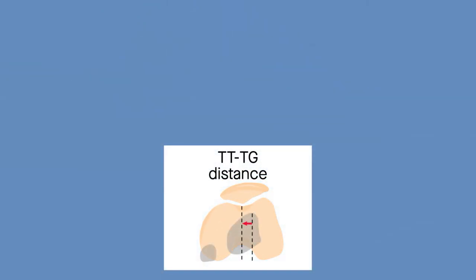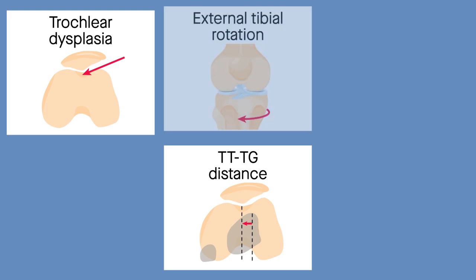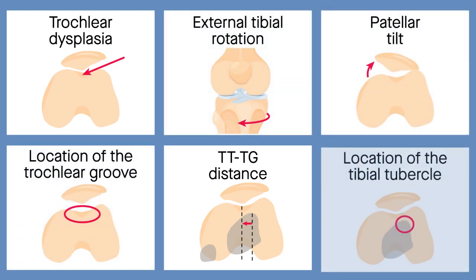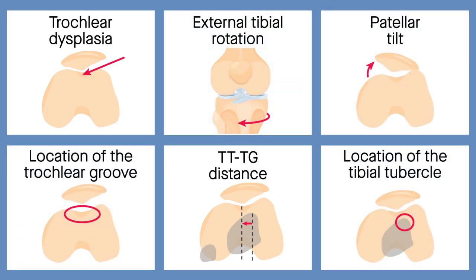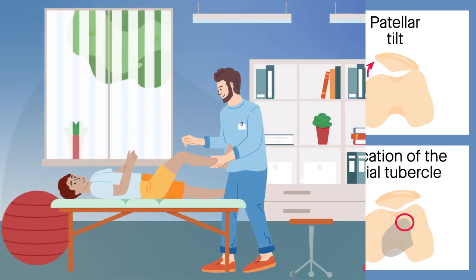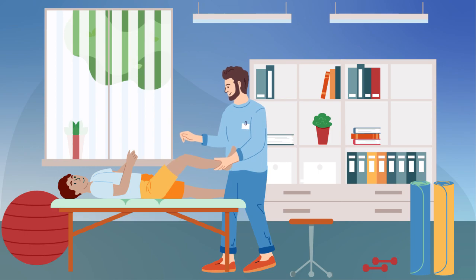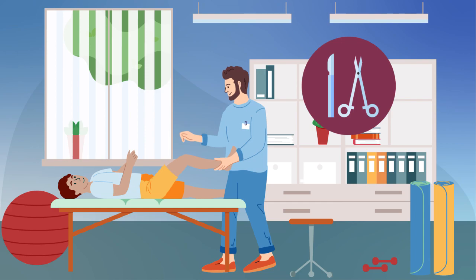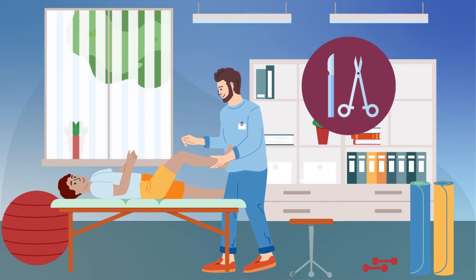While more work is needed to verify this sequence of events, the overall message is clear: TT-TG distance is not a standalone measurement, but rather a multifactorial one that is influenced directly or indirectly by trochlear dysplasia. Therefore, procedures designed to correct a lateral tibial tubercle appear to be more of a compensatory procedure than a way of addressing a real pathology.